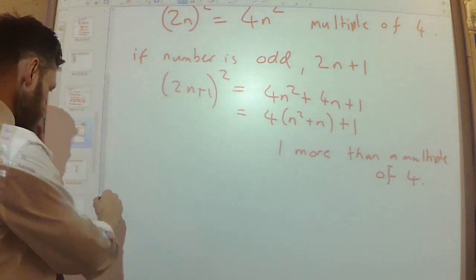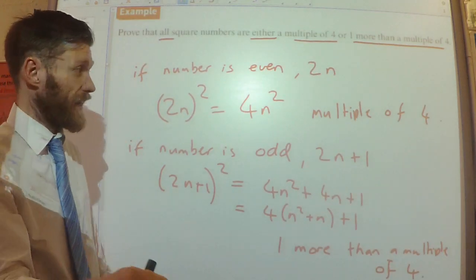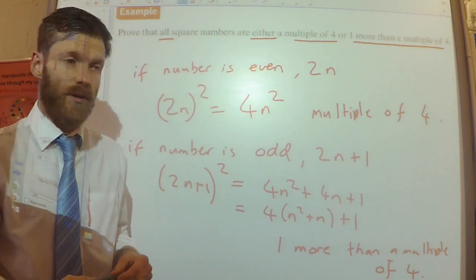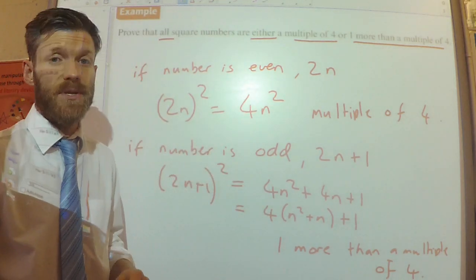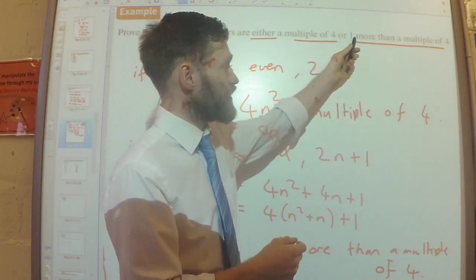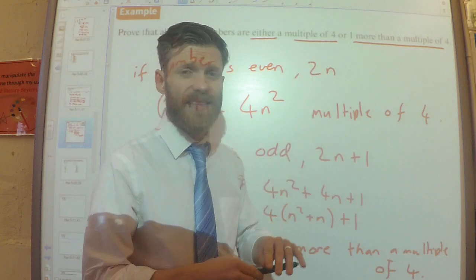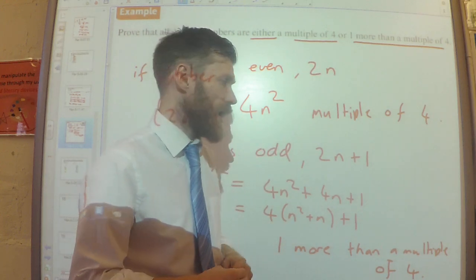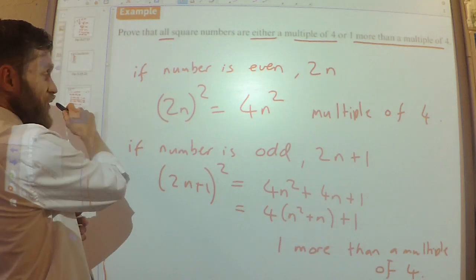And there we go. So, we've broken all numbers down into two cases, even and odd. And then I've proved it for even numbers, and I've proved it for odd numbers. The clue of the question was written like that there. That's what allowed me to see, okay, yeah, I'm going to break it down into two cases. And yeah, that's proved by exhaustion.